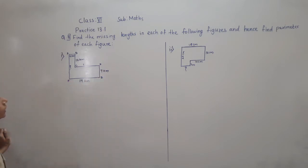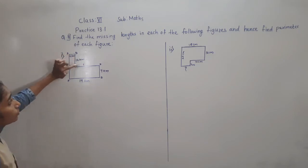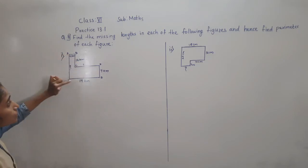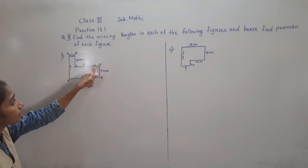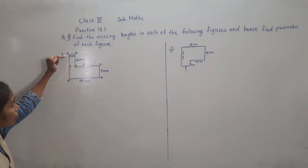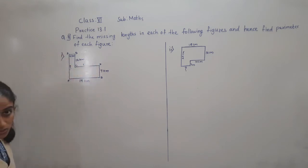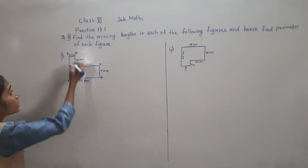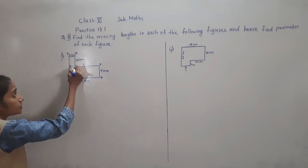Now I want to find the perimeter of this figure. So I should know the length CD and the length AF. To find them, I will extend BC.